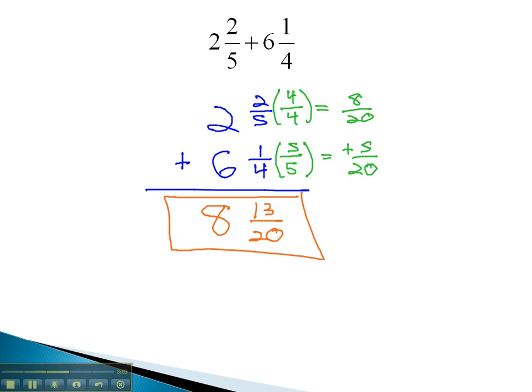To add mixed numbers, we simply line them up and work from right to left, doing the fraction first, and then the whole number.